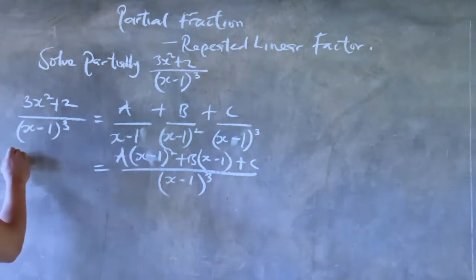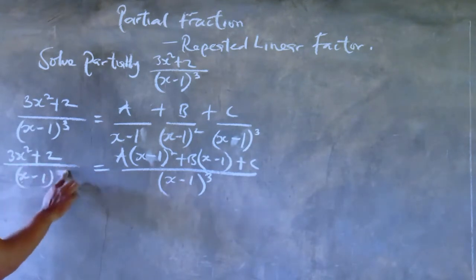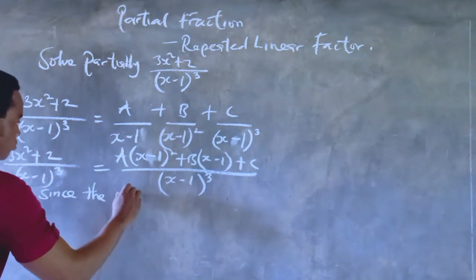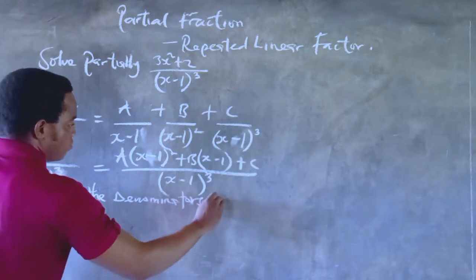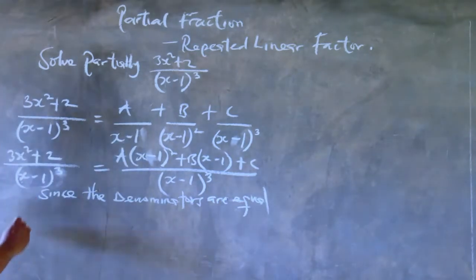So, on this side we have 3x squared plus 2 all over (x minus 1) raised to power 3. At this point, you will notice that the denominators are equal. We have (x minus 1) raised to power 3 on both sides of the denominators.